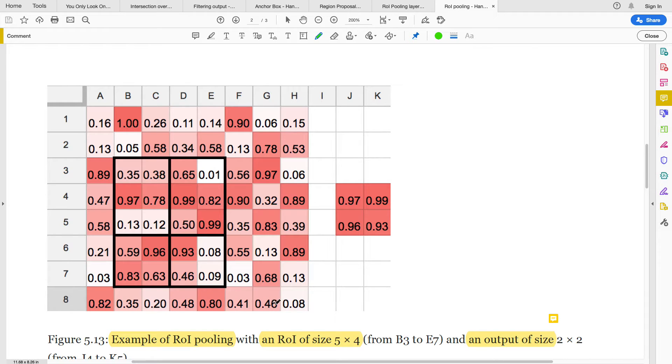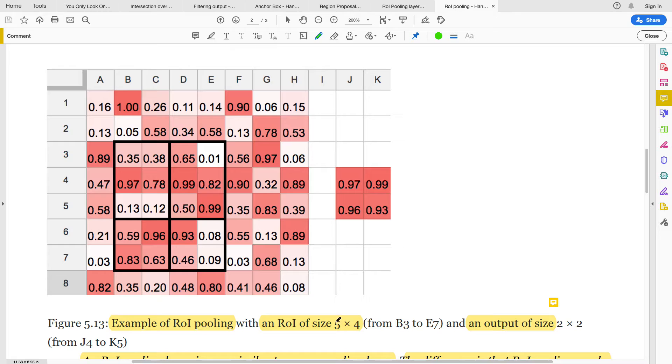From A1 to H8 is our feature map. Now let's say we take an ROI pooling of size 5 by 4. In black is the ROI size, just like you have in a convolutional neural network.